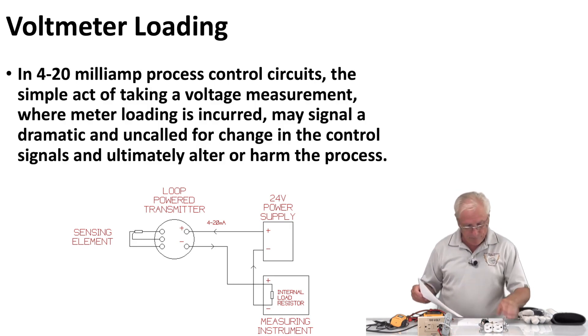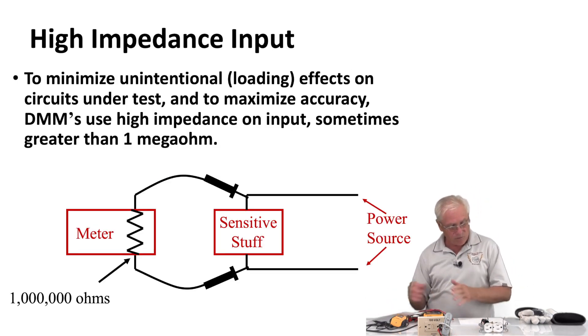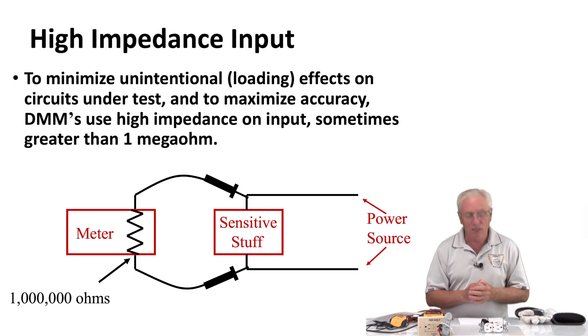Finally, one more slide to look at. You'll see I have, I'm showing a high impedance input to minimize unintentional loading effects on circuits under test. To maximize accuracy, digital multimeters use high impedance input, sometimes greater than one megaohm. It used to be very common, test instruments would be somewhere around 10,000 ohms on their input, but now they are one megaohm or greater, so we don't impact the circuit.